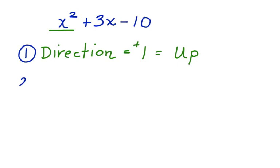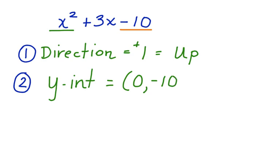The second thing we want to determine is the y-intercept. To determine the y-intercept, we're going to look at the c value. The c value is here. It is negative 10. So we can say that the y-intercept is going to be 0, negative 10.